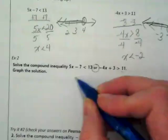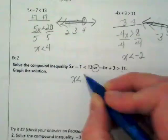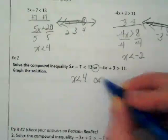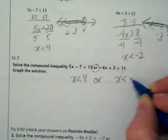And we end up with the same answers. This one is going to be x is less than 4, or this one is going to be x is less than negative 2.